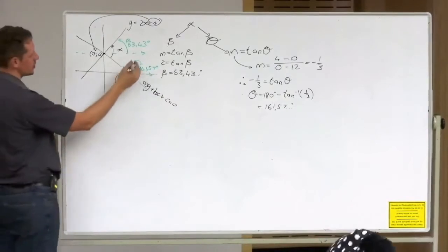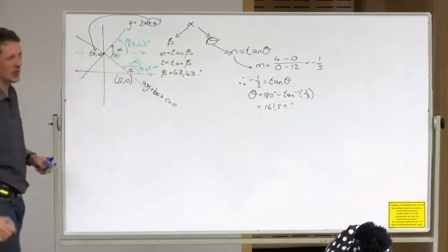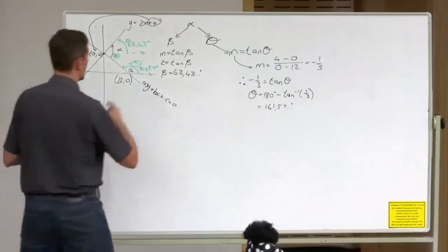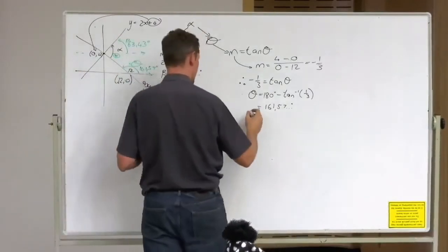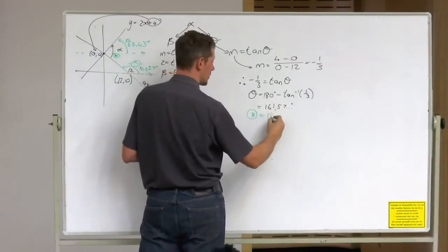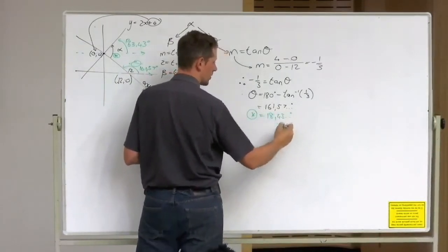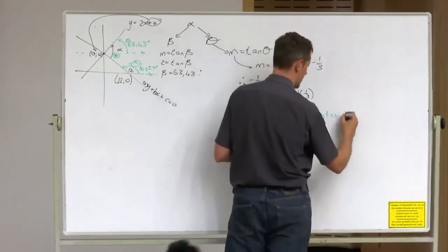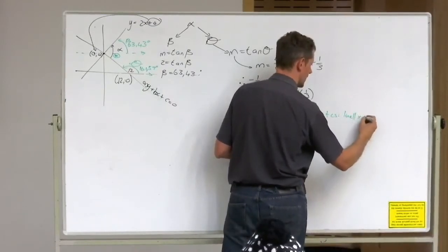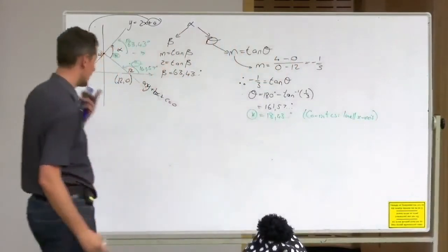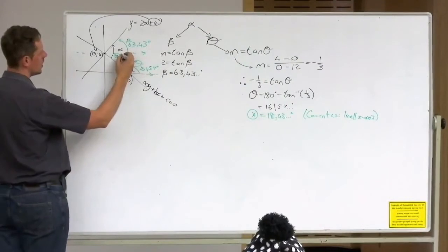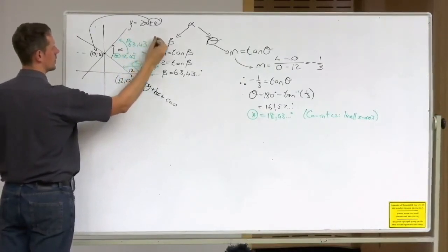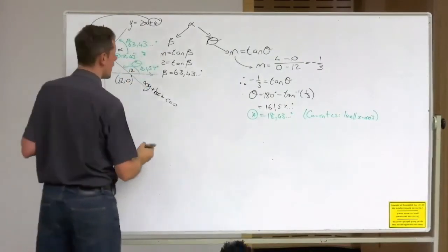What is the relationship between theta and that little star there? You've got parallel lines. So these two have to add up to 180. So little star is equal to 18.43 degrees because of co-interior angles. And this just compels me, line parallel to x-axis. So this little angle here is going to be 18.43 degrees.